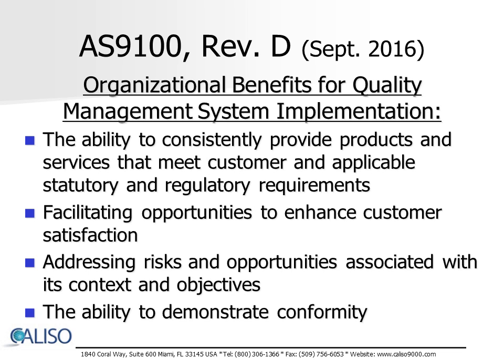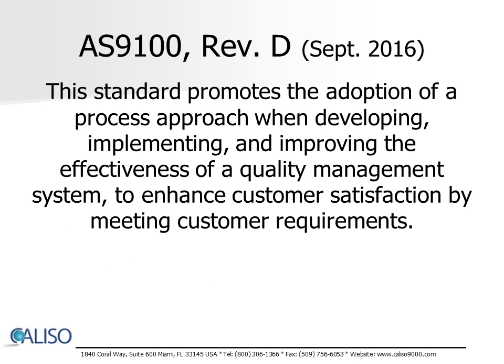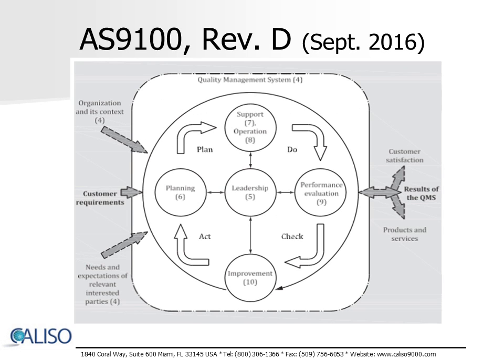The potential benefits to an organization of implementing a quality management system based on this standard are listed here. This standard employs the process approach, which incorporates the Plan, Do, Check, Act — or PDCA — cycle and risk-based thinking. The process approach enables an organization to plan its processes and their interactions. The diagram seen here represents the structure of the standard and how each clause relates to the PDCA cycle.